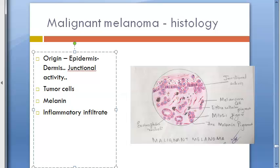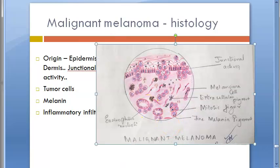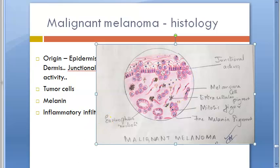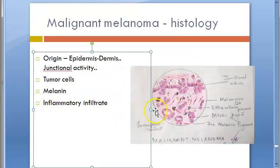You can clearly see in the diagram that there is growth downwards into the dermis. From the epidermis, the tumor extends below — this is junctional activity between the epidermis and the dermis. Growth into the dermis is the key feature of origin.